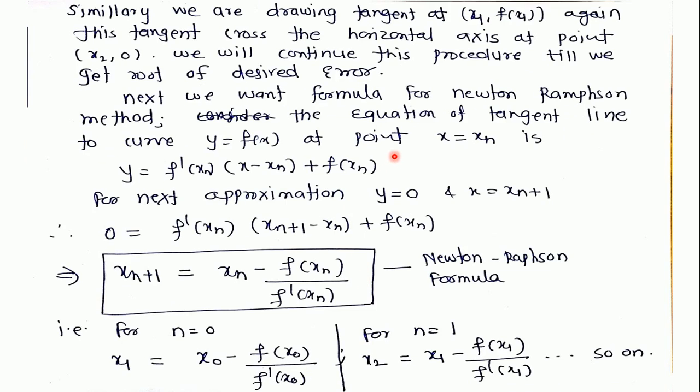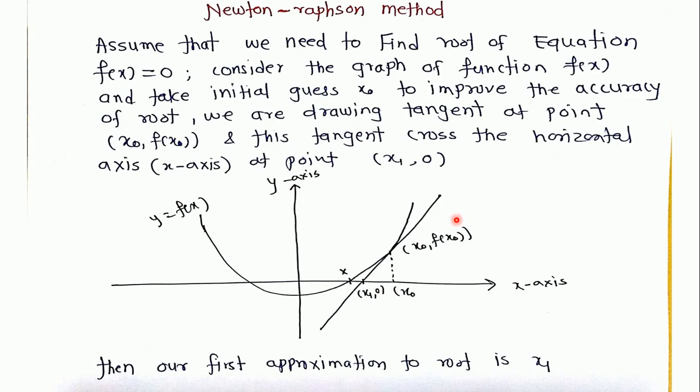Consider the equation of the tangent at point x equals xn to the function y equals f(x). The formula is y equals f'(xn) times (x minus xn) plus f(xn). For the next approximation y equals 0 and x equals xn+1. See the graph. This is our initial guess and if we are drawing the tangent at this point (x0, f(x0)) then this will cut at this point where the value of next approximation is x1 and value of y is 0.